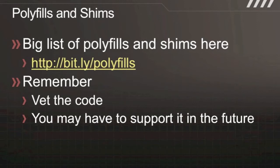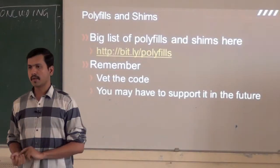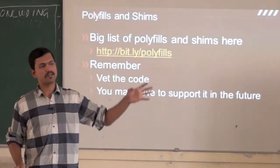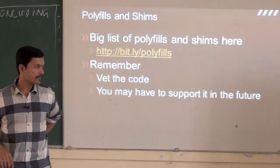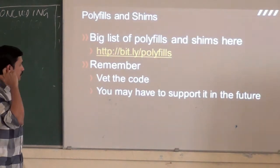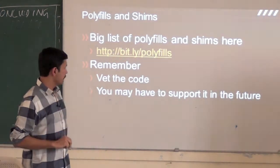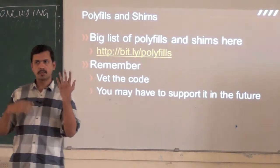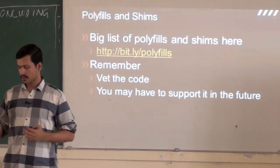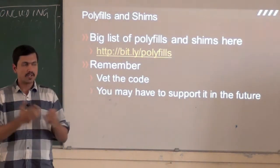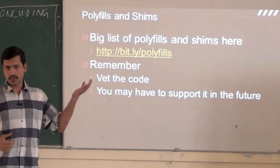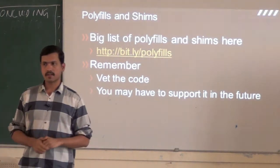You can go to that particular URL — this is a GitHub page maintained by the folks who wrote Modernizr. There is a dynamic list of polyfills and shims available for major W3C specifications — bit.ly/polyfills. Like any open source project you use, remember to vet the code. You can do the QA yourself, and you may have to support it in the future.